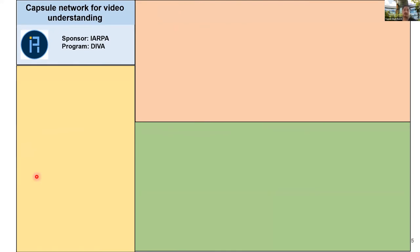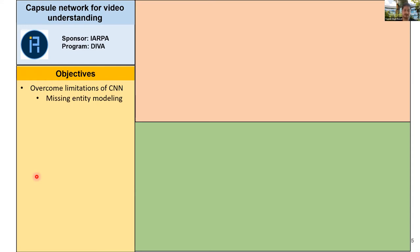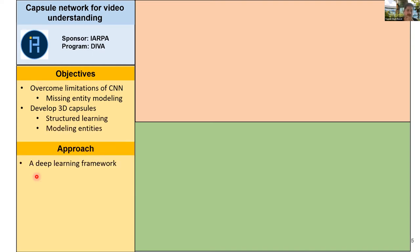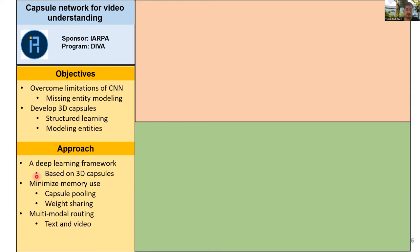The other project I want to talk about is capsule networks, which we have been working on for a while. The idea is to tackle the limitations of traditional convolutional neural networks — one of the biggest limitations is they don't model entity relationships. We want to tackle that problem using 3D capsules, mainly developed for videos where we have 3D data. This is a deep learning network which can be trained end to end. One main focus is how we can minimize memory utilization so that we can train these networks efficiently, and we have developed techniques to do that.